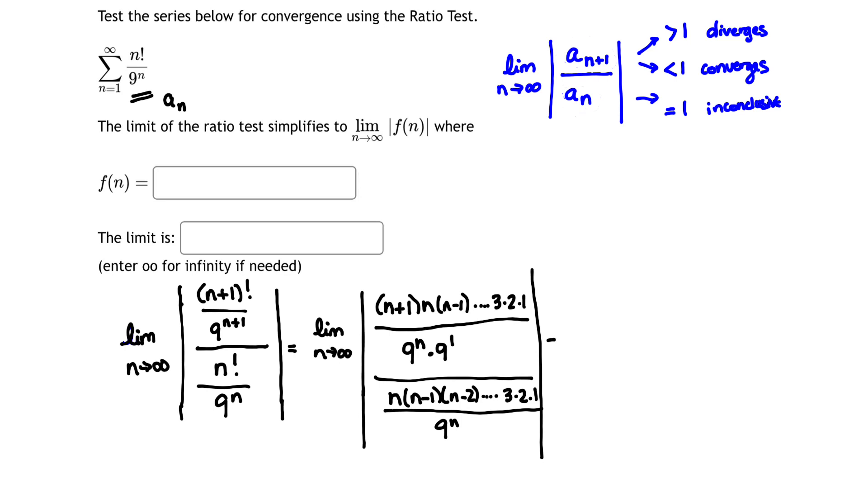We have a numerator, we have a denominator. Let's simplify this complex fraction by rewriting it as n plus 1 times n times n minus 1 divided by 9 to the n times 9 to the 1, and then let's invert and flip our denominator and make that 9 to the n on top over n times n minus 1 all the way down.